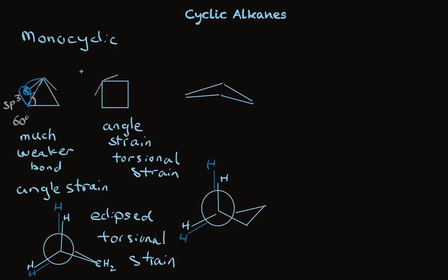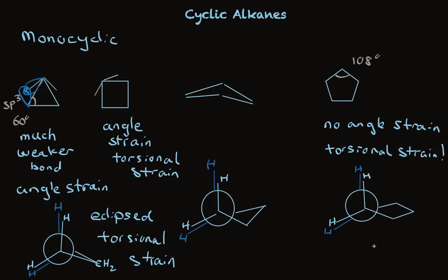When we get to five carbons, the internal angle is 108. The good match of the 108 degree angle with the tetrahedral angle means that there's virtually no angle strain. So a flat cyclopentane maximizes the torsional strain. And it too puckers a little bit in an attempt to relieve some of that torsional strain. So it's not perfectly flat, but it's nearly flat.